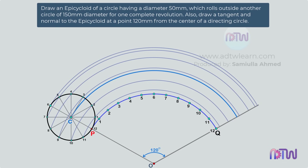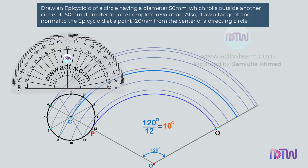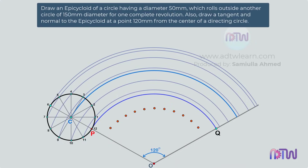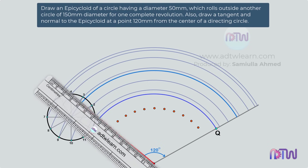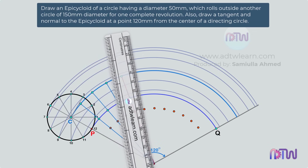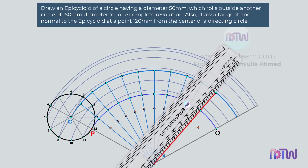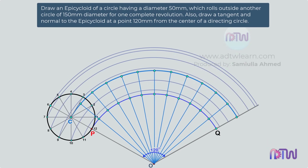We need to mark all these points on the curve. To get the exact location, we need to divide this arc into 12 equal parts. To do so, divide this 120 degrees into 12 parts, which equals 10 degrees each. Take a protractor, keep it on the line with center point O coinciding with the protractor center, and mark 10, 20, 30 degrees and so on up to 110 degrees. Using these points as reference, draw lines from center point O up to the center arc. Name these points as 1-dash, 2-dash, 3-dash and so on up to 12-dash. Mark the center positions as C1, C2, C3 and so on up to C12.